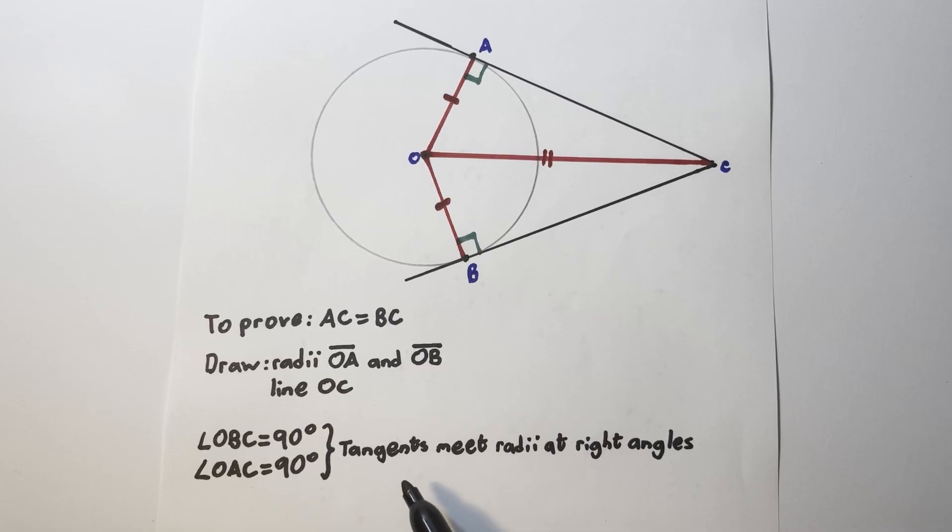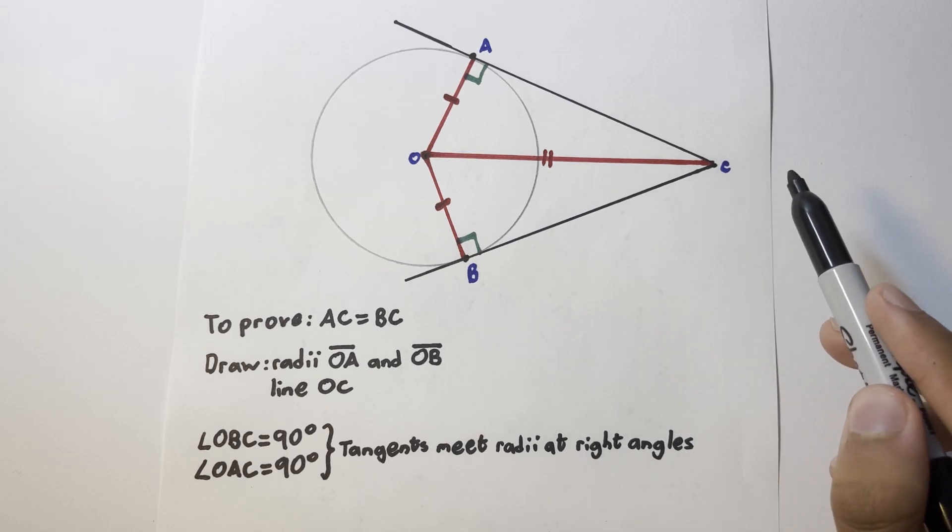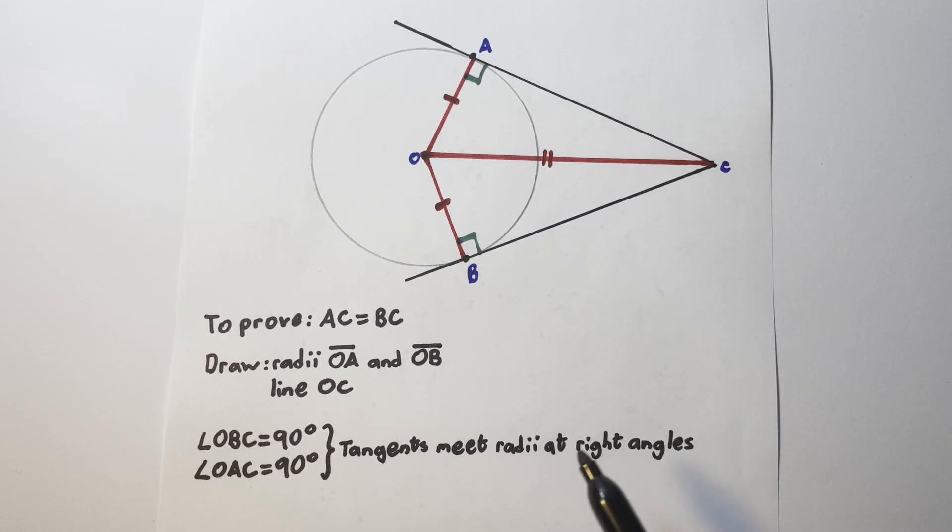Next, remember one of the first and more basic circle theorems that we covered in my first video, that tangents meet radii at right angles. If you want to re-familiarize with the theorem, then please click on the link in the top right corner and you can watch that segment of the video again.